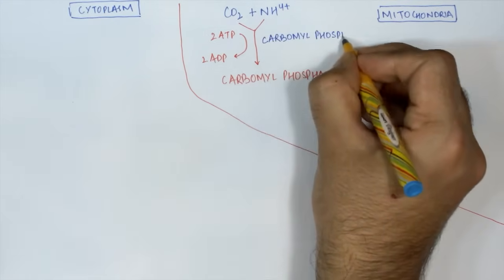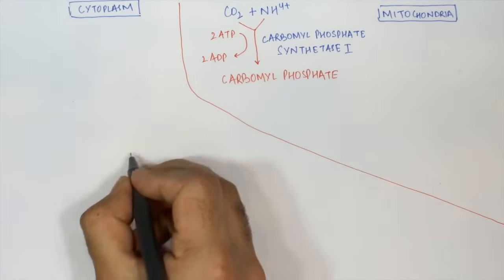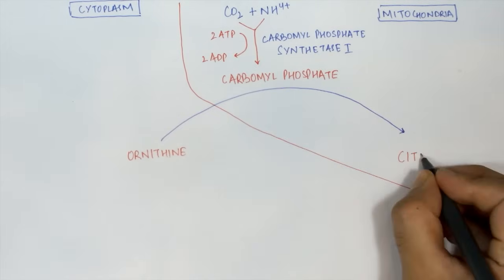After the formation of carbamyl phosphate, this combines with the amino acid ornithine and leads to the formation of citrulline.